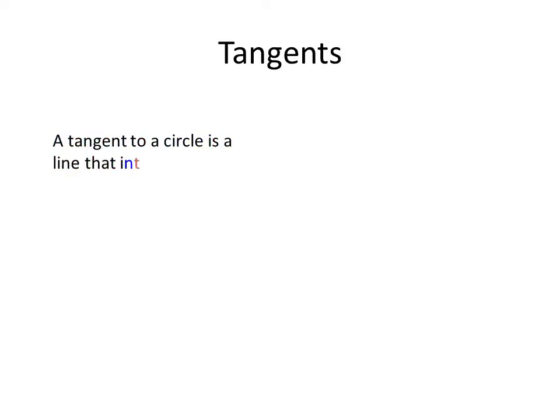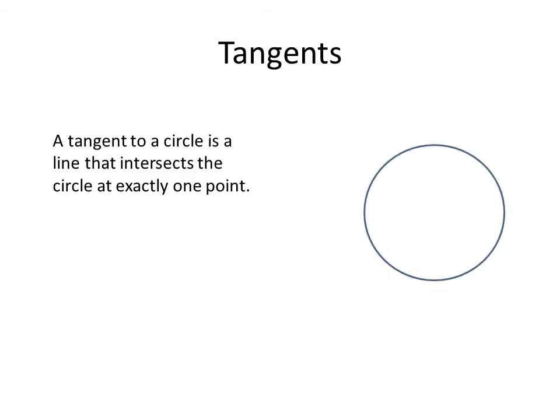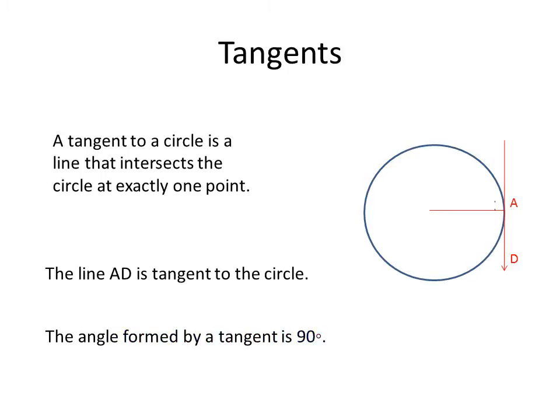Another important term to remember is tangents. A tangent to a circle is the line that intersects the circle at exactly one point. Here on the right you see a tangent line going down touching the circle — line AD is tangent to the circle. One important thing to keep in mind is that the angle formed by the tangent is always exactly 90 degrees.